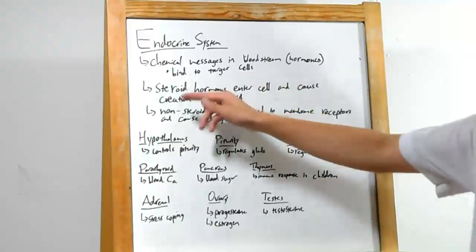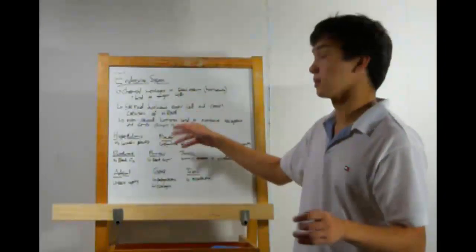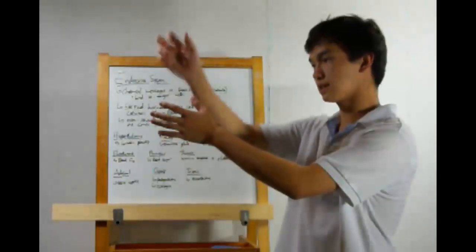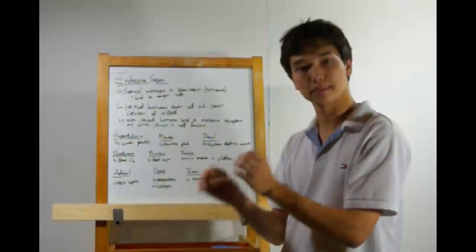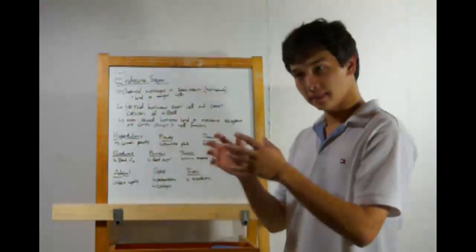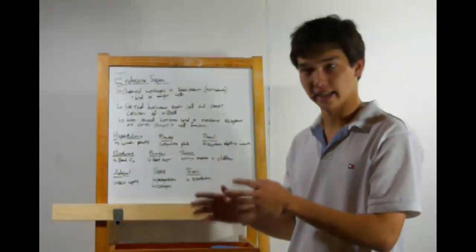Let's look at the two types of hormones, steroid hormones and non-steroid hormones. Steroid hormones, or steroids, will actually enter the cell. They'll pass straight through the cell membrane and bind to receptors on the DNA to cause transcription and the creation of mRNA. These are more powerful than non-steroid hormones because they directly affect DNA expression.